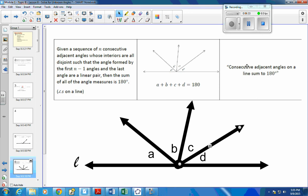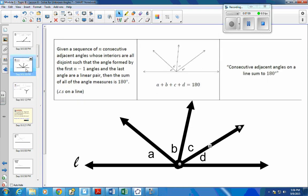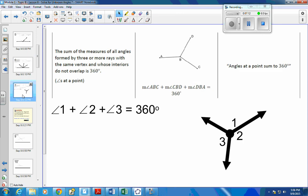So we say consecutive adjacent, adjacent means next to angles, on a line sum to 180. So this angle A and this angle B are adjacent, this angle B and this angle C are adjacent, and C and D are adjacent. So all of them are adjacent, they are consecutive, and they form or make up this line. And so A plus B plus C plus D, the measures, should be 180 degrees. And we've got one more piece. Hopefully you paused the video and got this into your notes. Last piece.